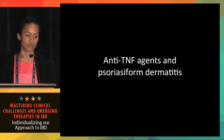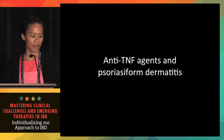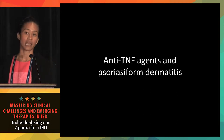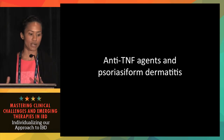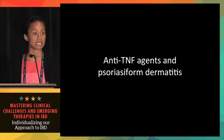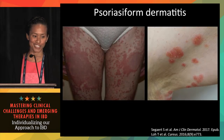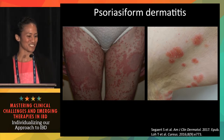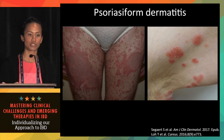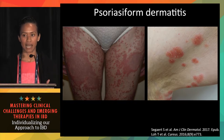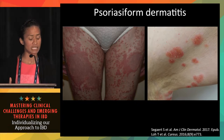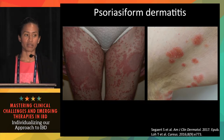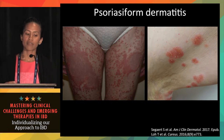Focusing in on psoriasiform dermatitis — I'll show photos of psoriasiform dermatitis, psoriasis, and palmoplantar pustulosis, which are all often grouped together in the literature. Psoriasiform dermatitis is named psoriasis-like because it does not quite meet all clinical and histologic features of psoriasis. It tends to overlap between eczema and psoriasis — the lesions are less well-defined, with a red-orange color and a bit of scale.